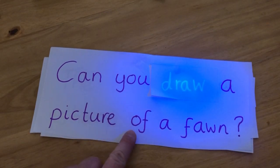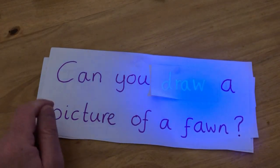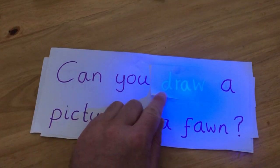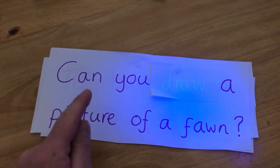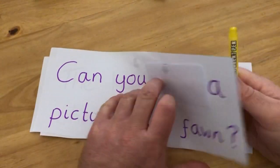Picture. My turn. Can you draw a picture of a fawn? Fawn. And a fawn is a young deer. Can you draw a picture of a fawn? Next one, let's just review the next one.